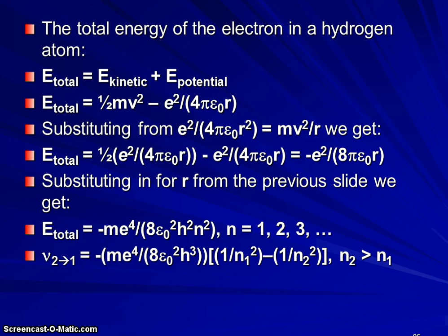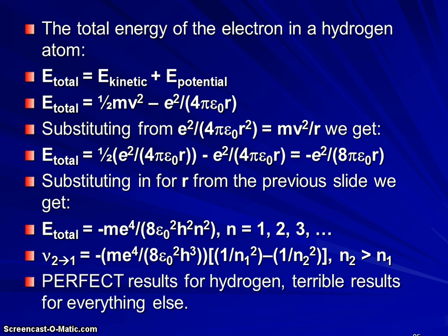And so what Niels Bohr had done is derived from first principles, Rydberg's experimentally determined constant. And this equation gives perfect results for hydrogen experiments and terrible results for helium and any other atom or molecule larger than hydrogen, any system with two or more electrons.